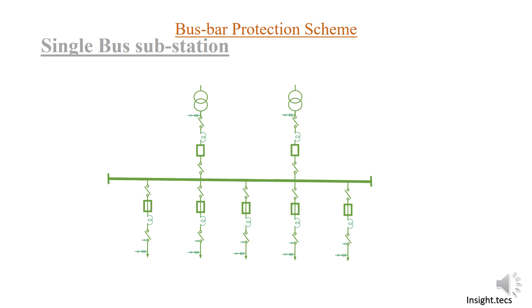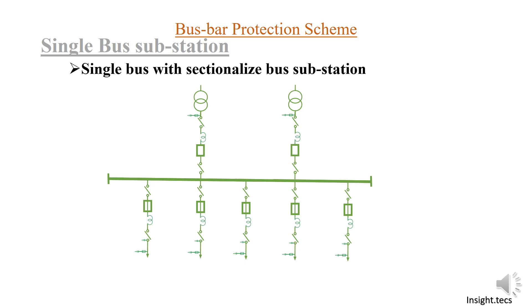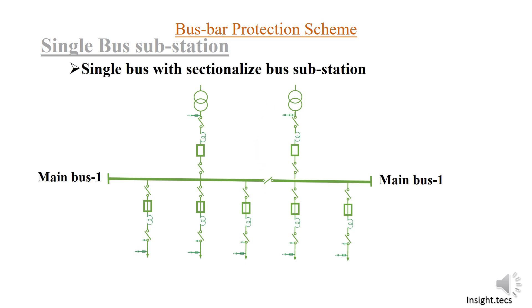The other type of single bus substation is the single bus with a sectionalized bus substation. The difference here is that an isolator or a circuit breaker is kept in between, providing a section in the main bus itself. It is the same bus but now having two sections. In order to do maintenance, you can open this isolator and isolate both bus sections, so the total substation will not lose power. You can do maintenance of the bus in two sections, and this is the single bus with the sectionalized isolator.